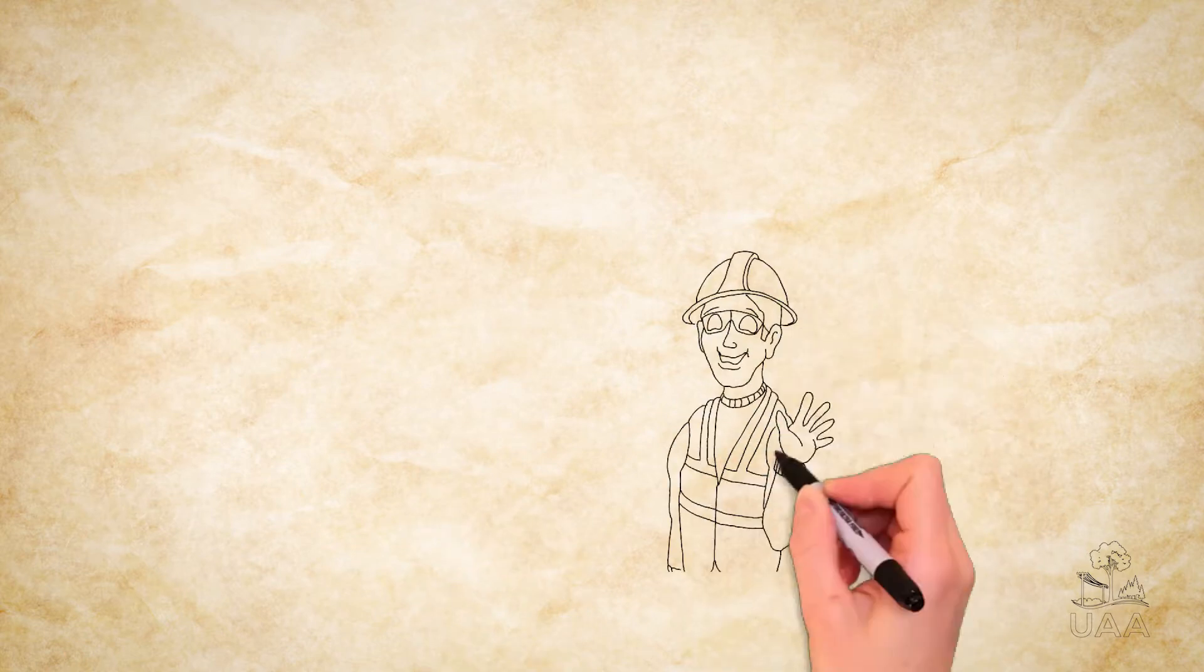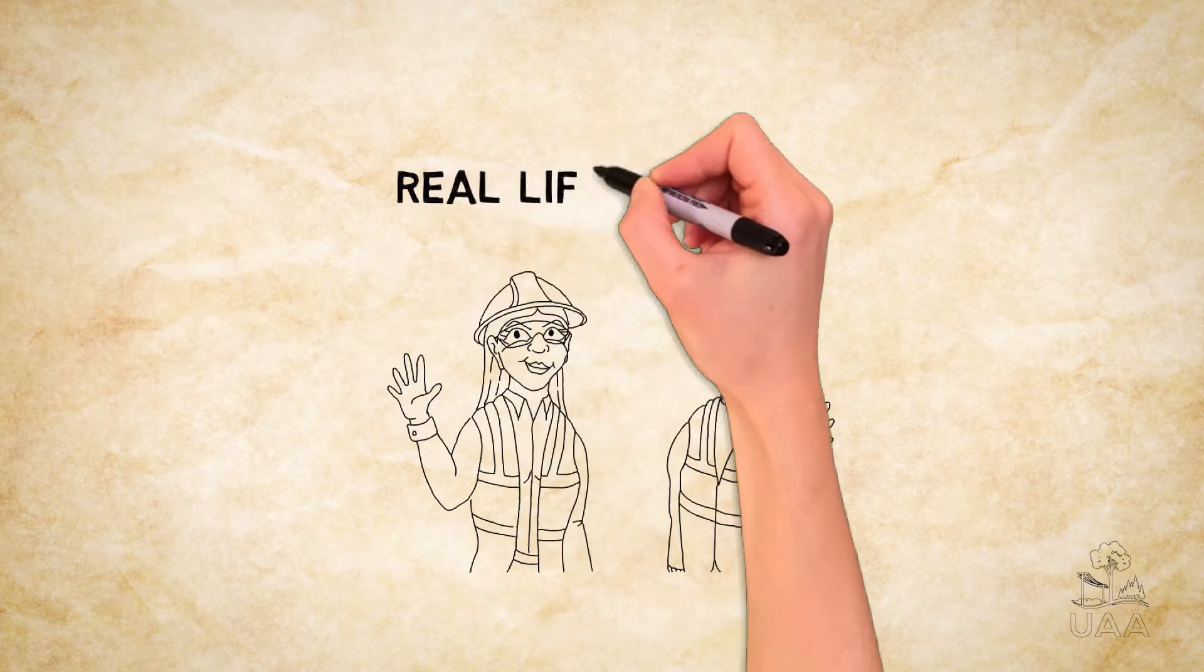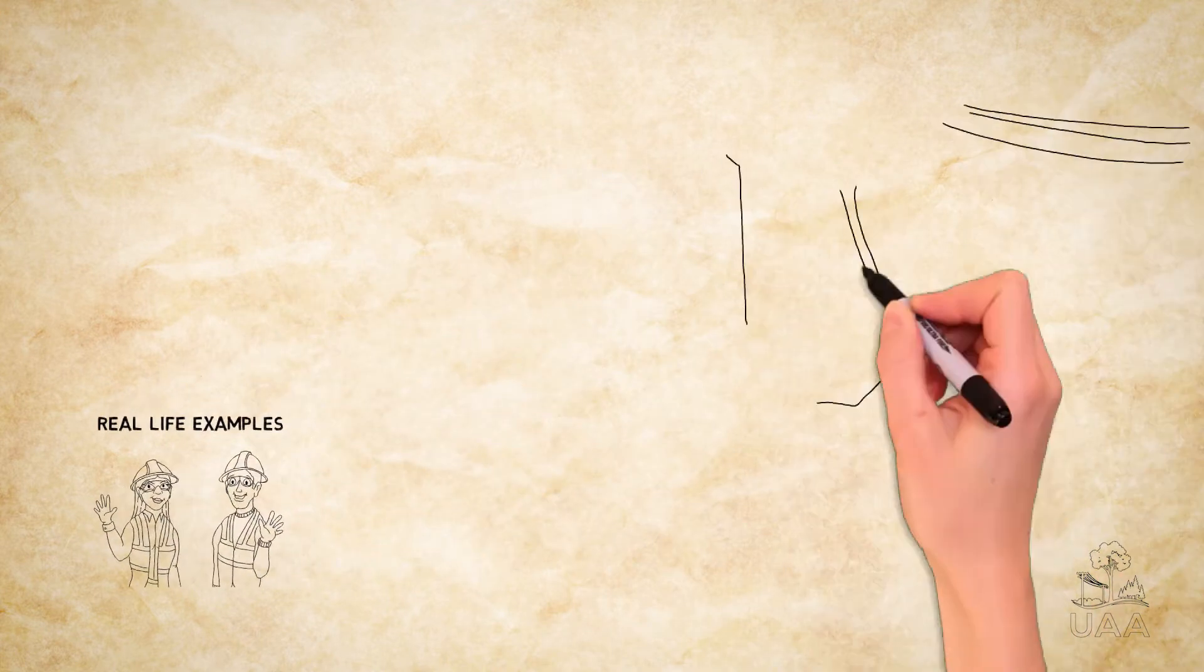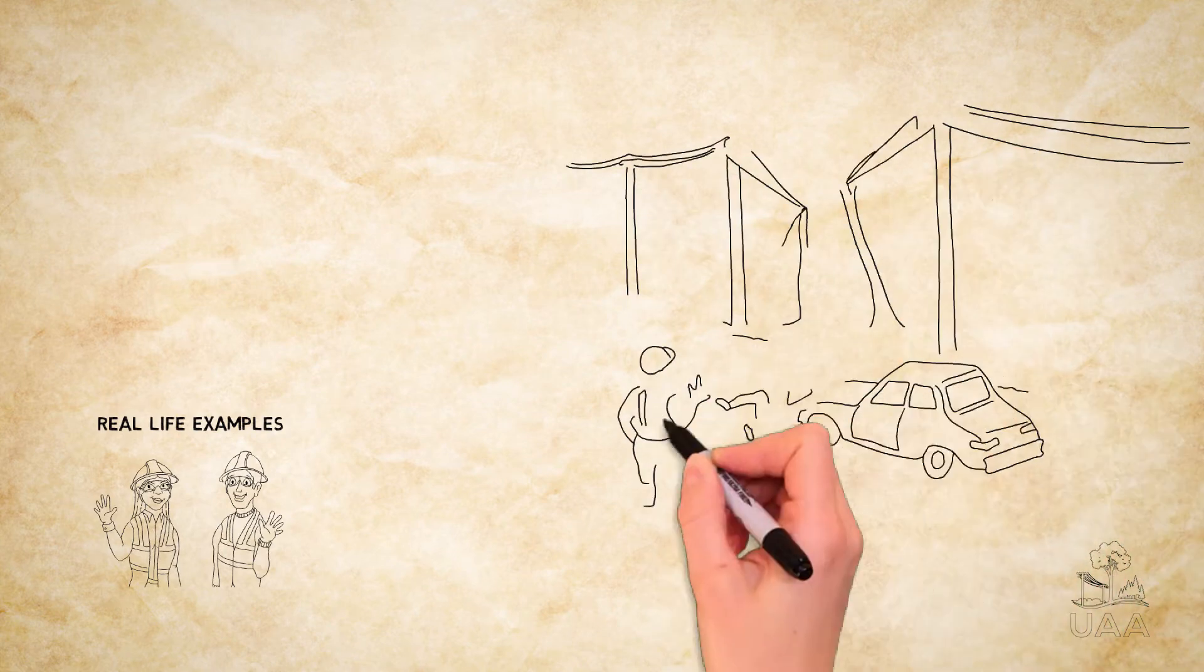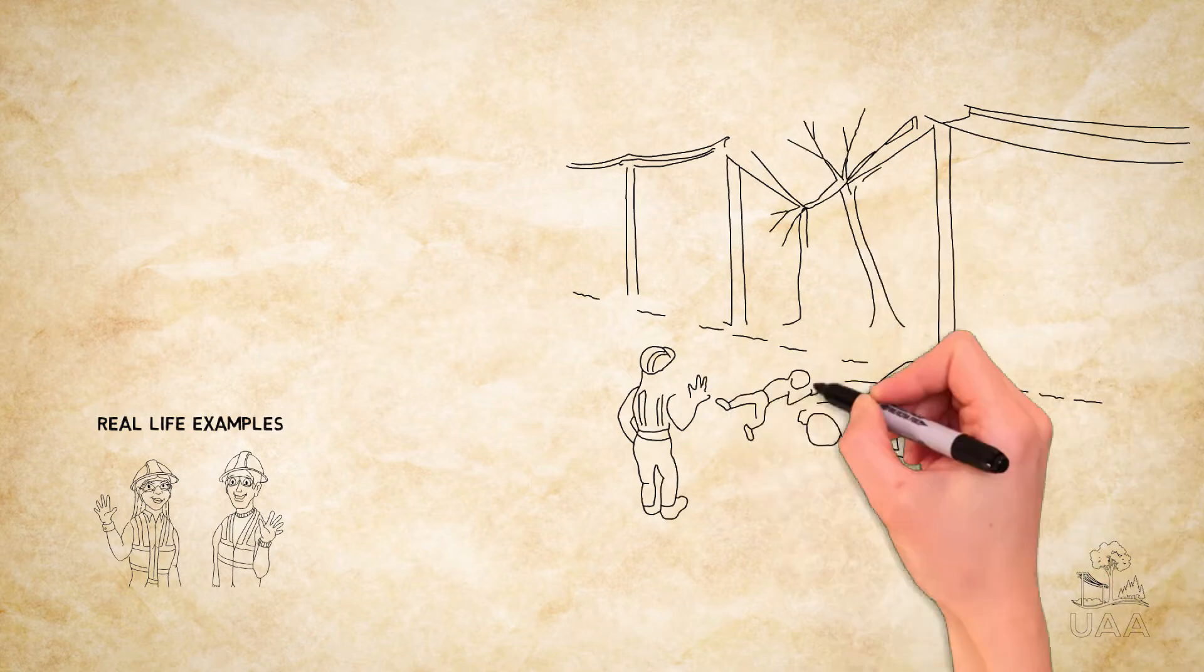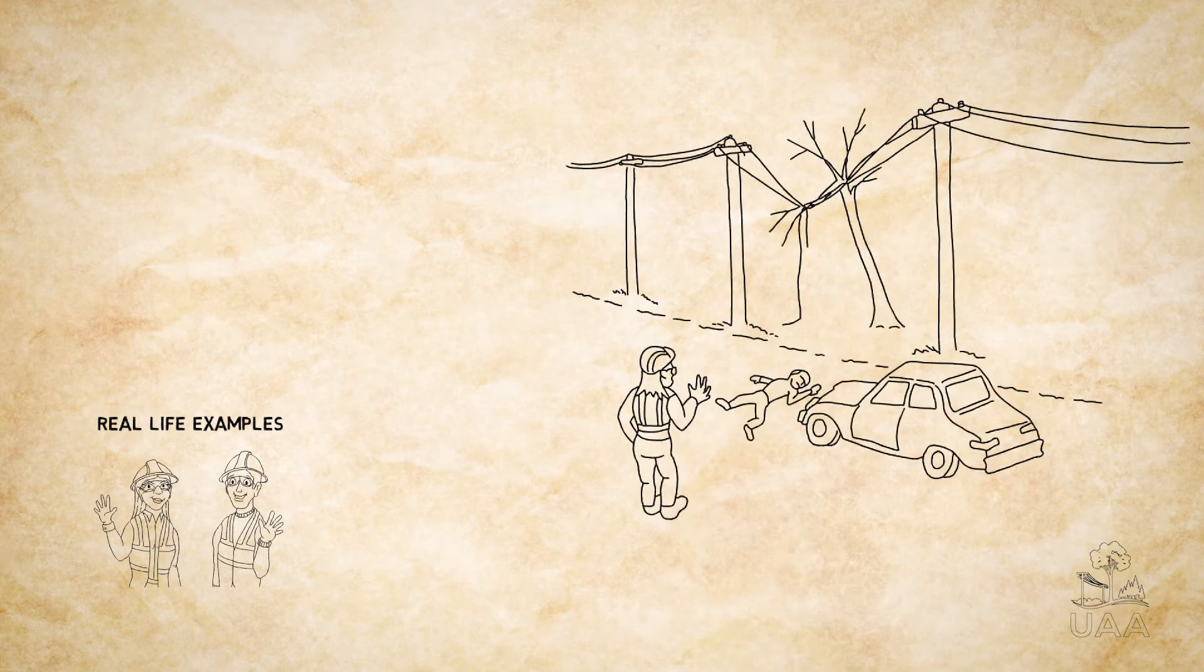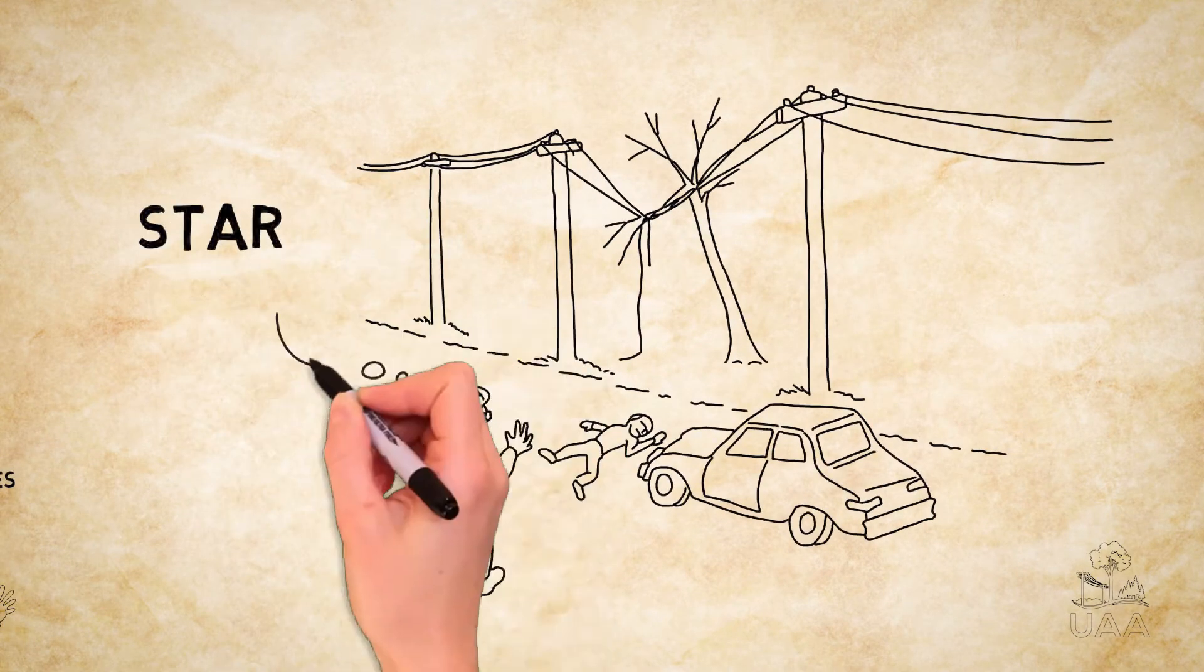Let's check in with our utility arborists Alex and Carmen for some real life examples of step and touch potential. Carmen is on a job site following a strong thunderstorm. She notices a person unresponsive near their vehicle and she sees a downed power line tangled in a nearby tree. Carmen follows the STAR process.